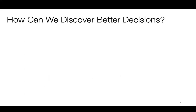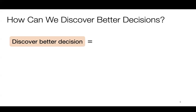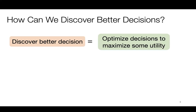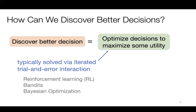How can we solve this question of discovering better decisions? One way to approach this is to model the problem as optimizing decisions to maximize some kind of utility function. If you can quantify the notion of being better in terms of a reward or utility function, then you can simply try to optimize the decision variable with respect to that reward. This paradigm is very popular in reinforcement learning, Bayesian optimization, bandits, and related fields, which all try to solve such reward maximization problems.